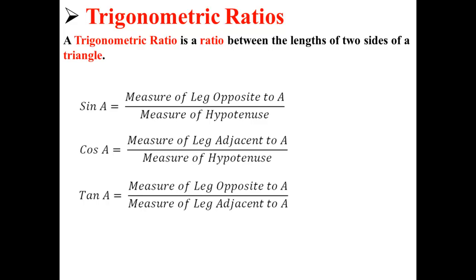There are three trig ratios: sine, cosine, and tangent. Sine is equal to the measure of the leg opposite to A divided by the measure of the hypotenuse. Cosine is equal to the measure of the leg adjacent to A divided by the measure of the hypotenuse.